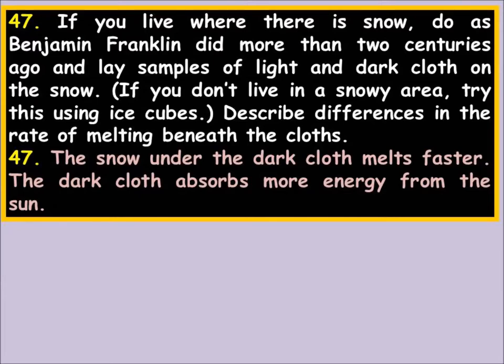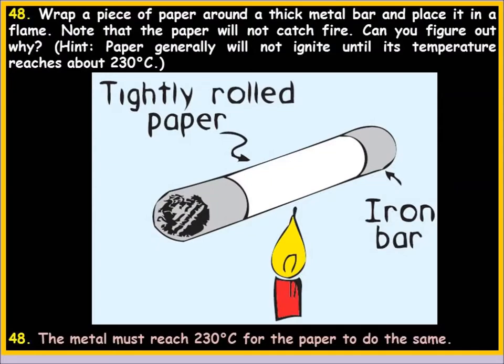If every homeowner did four things, we would have no energy problems: paint your house white, paint your roof white, redo all your windows, and insulate your attic — including with ventilation. Those four things would remarkably reduce the amount of energy we use. It's an absolute no-brainer.